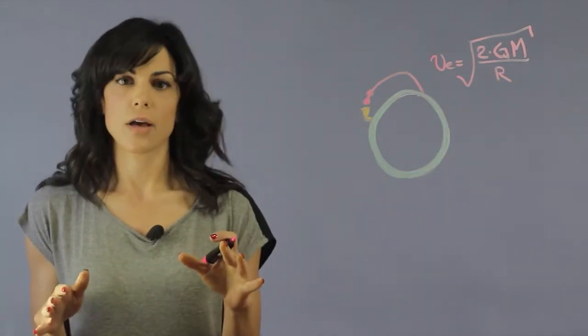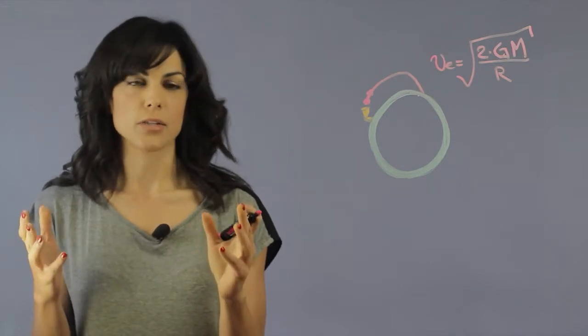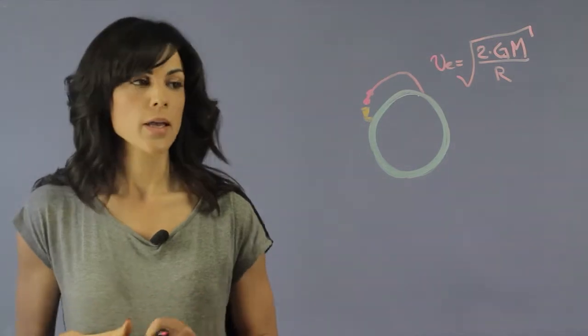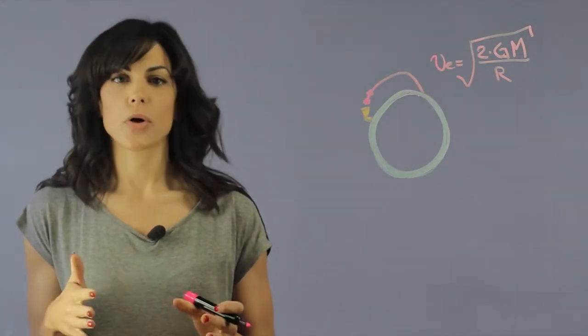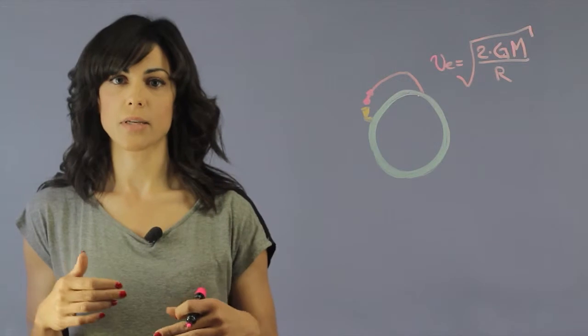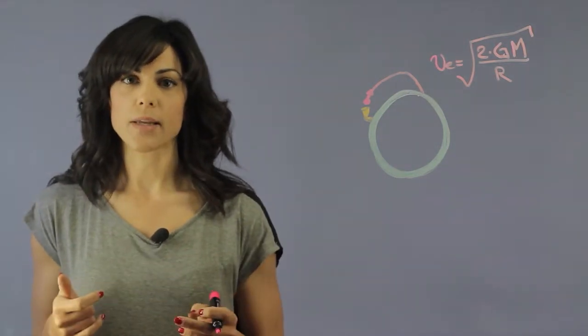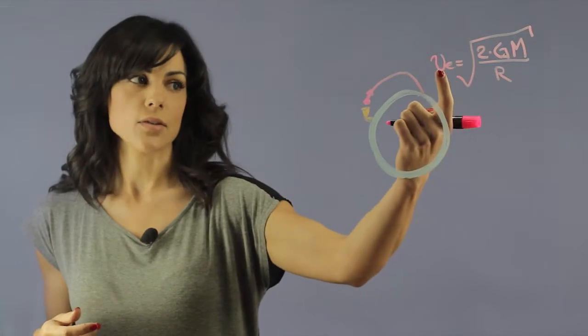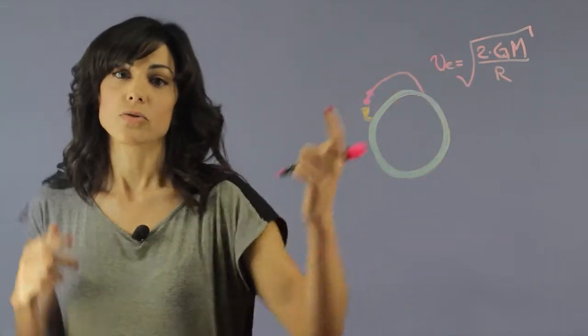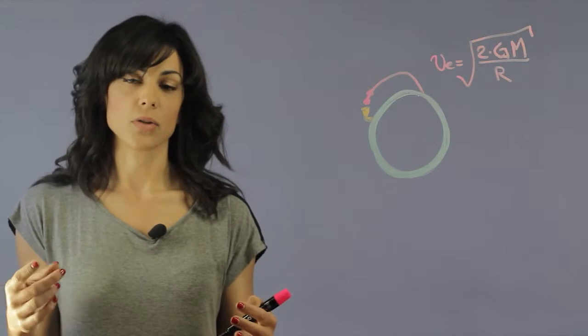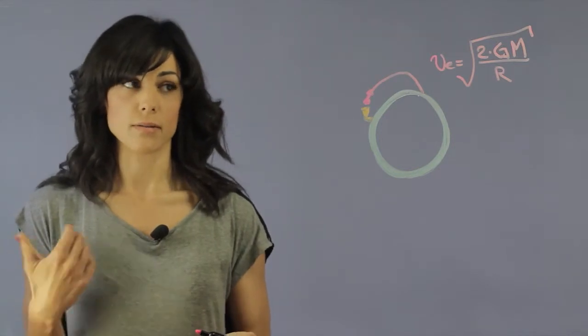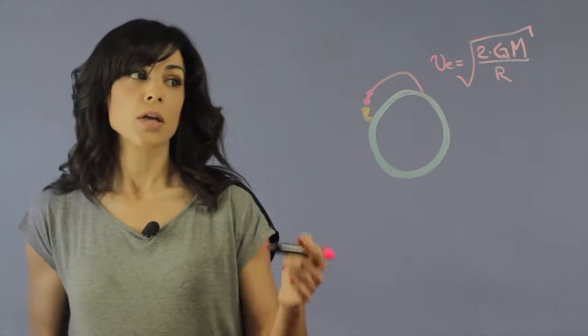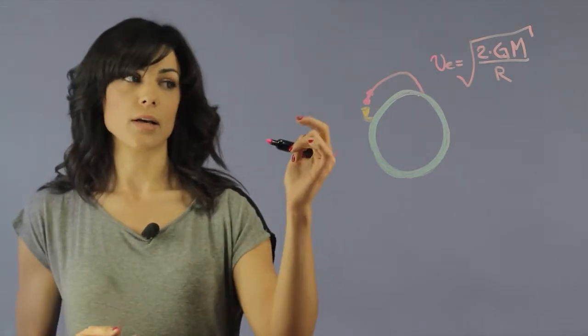Here on earth the escape velocity is about 25,000 miles per hour and we can easily calculate this. If we look at all the inner planets, the one that is most massive is the earth. As you can tell, the escape velocity depends on the mass. So out of the inner planets, the one that's going to have the highest escape velocity is going to be the one with the highest mass, and that's earth. So we're going to calculate the escape velocity.